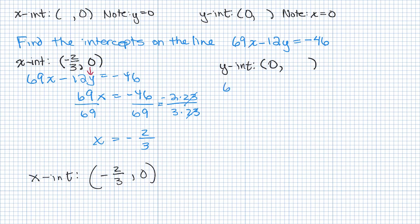All right. We're going to do the y-intercept same way. So if we have our equation of the line, 69x - 12y = -46. And now we're plugging in 0 for the x-coordinate, right? That will give us 69 times 0. That's 0. So this term basically disappears, and we have -12y = -46.